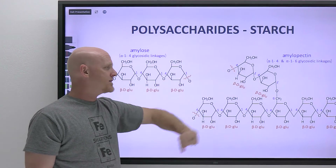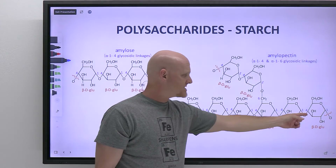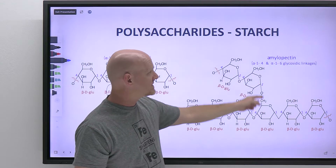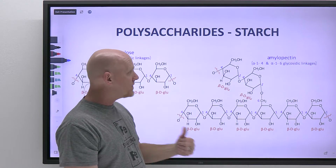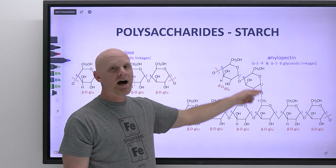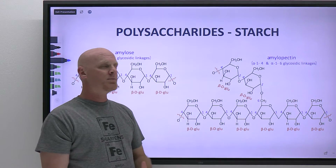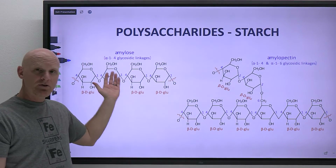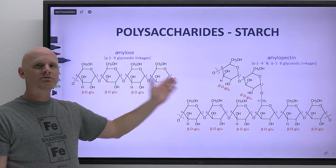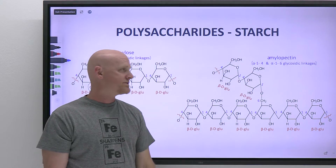Amylopectin is not simply linear — in addition to the alpha-1,4 linkages, every 20 or 30 monosaccharides it also has an alpha-1,6 glycosidic linkage, which makes it branched. You should know that amylose is linear, amylopectin is branched, they both have alpha-1,4 linkages, and that the branches in amylopectin are alpha-1,6.